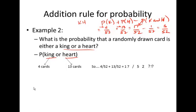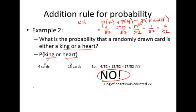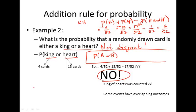The missing piece is that we counted the king of hearts here in these four. We also counted the king of hearts in those 13. So we counted the same card twice. So I have to subtract the probability that we have the king of hearts, minus 1 out of 52. So that would be 16 out of 52. Some events have overlapping outcomes. So these are not disjoint events.